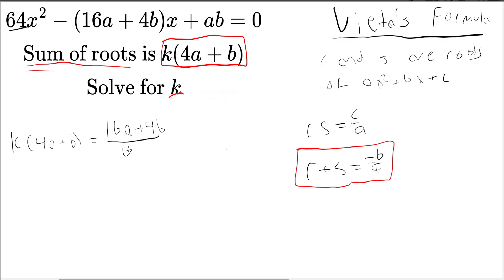This is all over 64. Now we can reduce the fraction down to (4a + b)/16. You can see we have common factors here. Both sides have 4a + b.